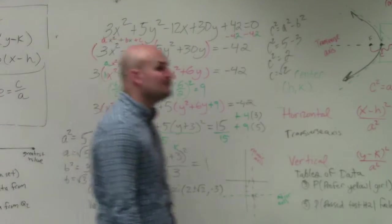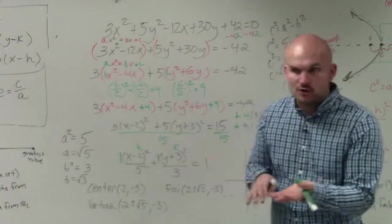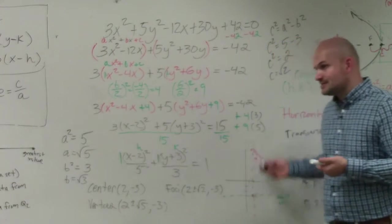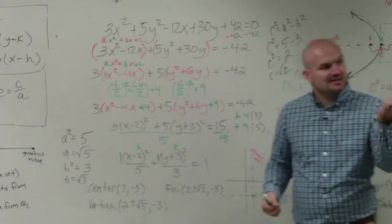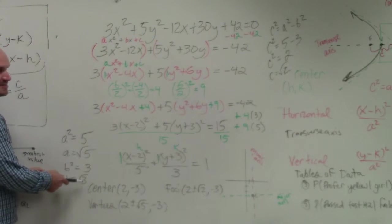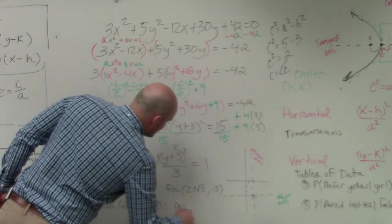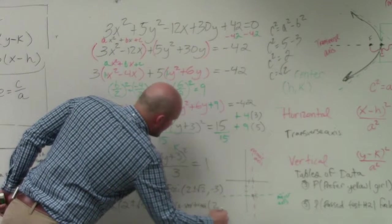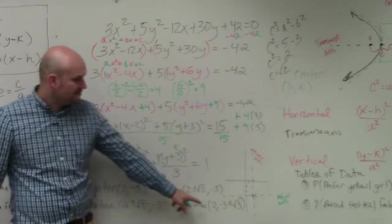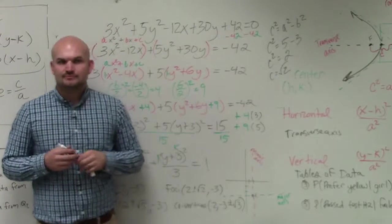The last thing is the co-vertices. The vertices, foci, and center all lie on the major axis going left to right. But the co-vertices lie on the minor axis, which is vertical. The co-vertices have a distance of B from your center. B is the square root of 3. Since they go up and down, the co-vertices are (2, negative 3 plus or minus the square root of 3).